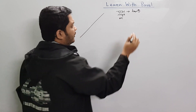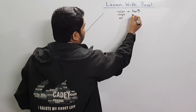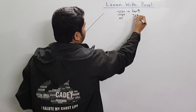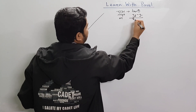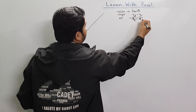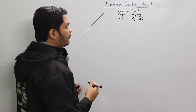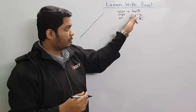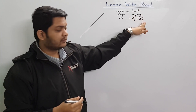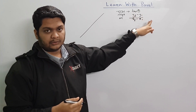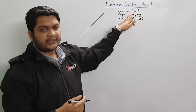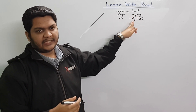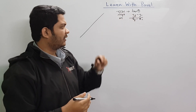y2 minus y1 divided by x2 minus x1. y1 minus y2 is equal to y1 minus y2. So if you look at the left, the left is equal to the left.